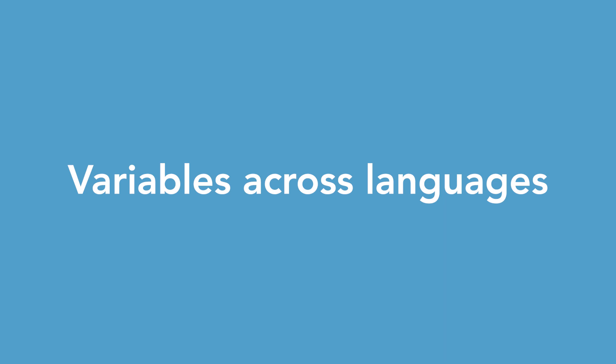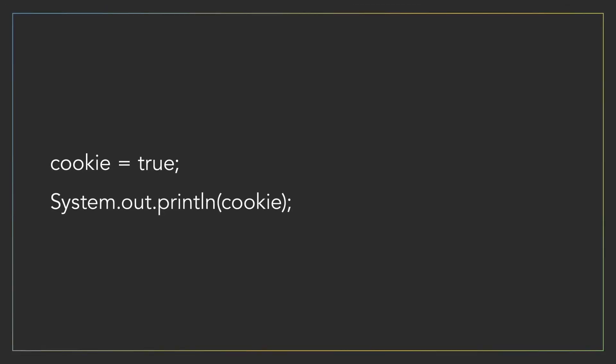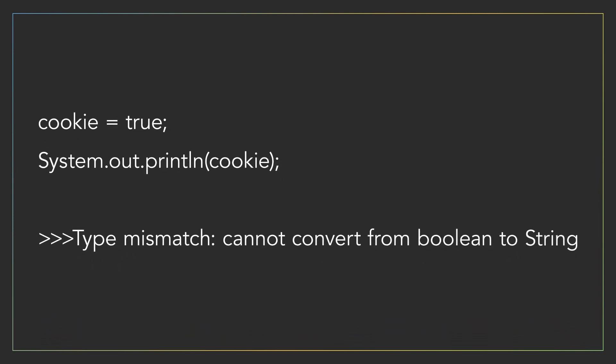Depending on the programming language you're working with, variables can behave in different ways. Some languages require that you define your variables and their types before you can use them, like Java, C-sharp, and C++. For example, if we want to store the name of a cookie in Java, we would first declare that it's going to be of type string, and then give our variable a name: cookie. When we run this code, we get sugar as our output. Since we've defined our variable as type string, we can't then later decide to set it to a different type, like an integer — when we compile our program, we'll receive an error, because Java is a strict programming language that doesn't allow you to reassign data types in this way.